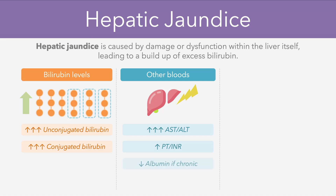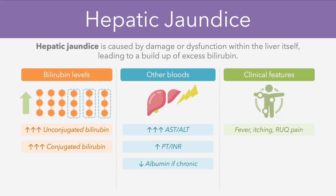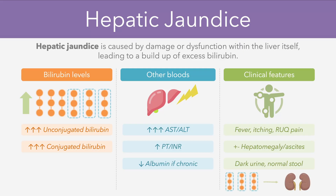There may also be decreased albumin if the condition is chronic. In terms of the clinical features, patients may have fever, itching, and right upper quadrant pain alongside the jaundice, and in some cases hepatomegaly and ascites. Hepatic jaundice often leads to darker urine compared to normal, because the conjugated bilirubin, which is water-soluble, backs up into the kidneys, where the orange colour results in darker urine being produced. The reason why the stool is normal is because the conjugated bilirubin can still be excreted into the bile ducts, so stercobilin is still produced as normal.